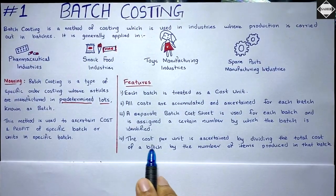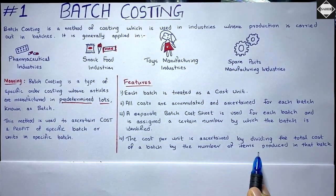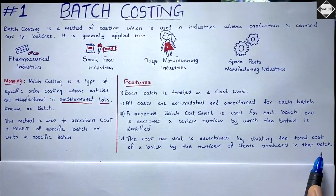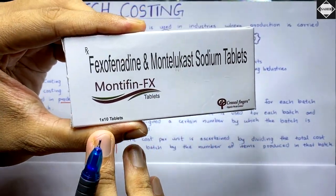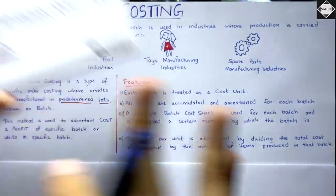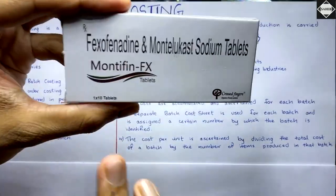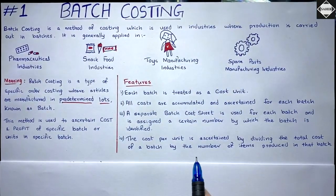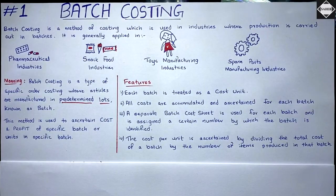The cost per unit is ascertained by dividing the total cost of a batch by the number of items produced in that batch. For example, if this box has 10 tablets and you want the cost of one tablet, you take the total cost of that batch and divide by the number of tablets in it. That's the concept of batch costing — very straightforward.